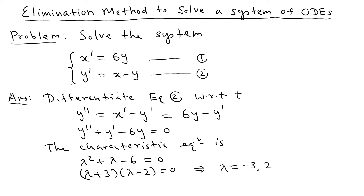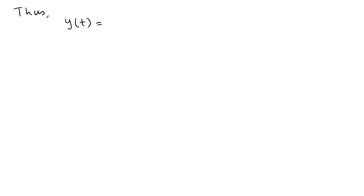Now we can write the solution for y. We have y(t) equals C1 e to the negative 3t plus C2 e to the 2t, corresponding to the two lambda values.